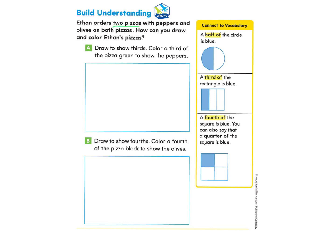Ethan orders two pizzas with peppers and olives on both pizzas. How can you draw and color Ethan's pizzas? Let's take a look at part A: Draw to show thirds. Color a third of the pizza green to show the peppers. Let's look at the connective vocabulary to make sure we have all the information to help solve this part A.